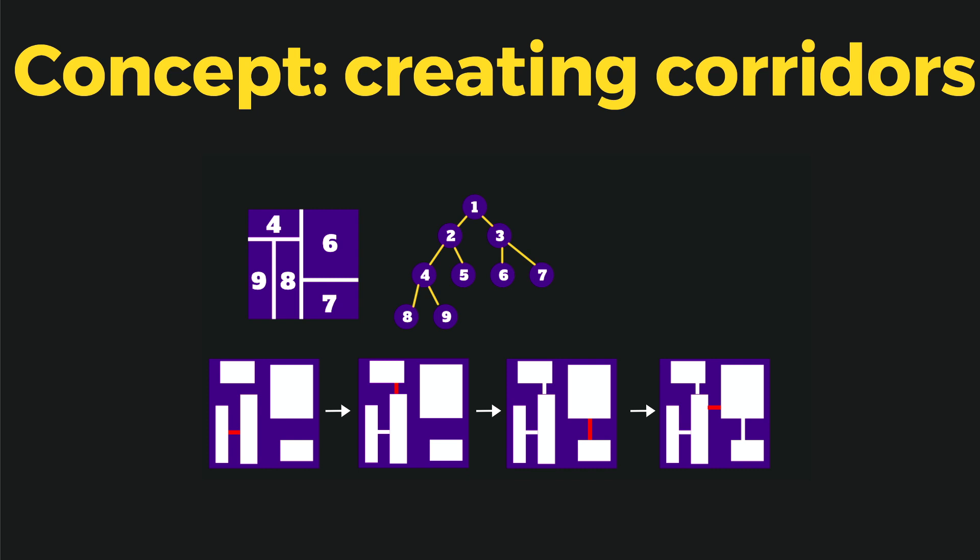So we start with the lowest, youngest nodes, so eight and nine, we connect those two. Then we go up to four and five. So five is made out of nine and eight, so we need a corridor that connects a group of rooms with one room. Next we go to six and seven and connect those.